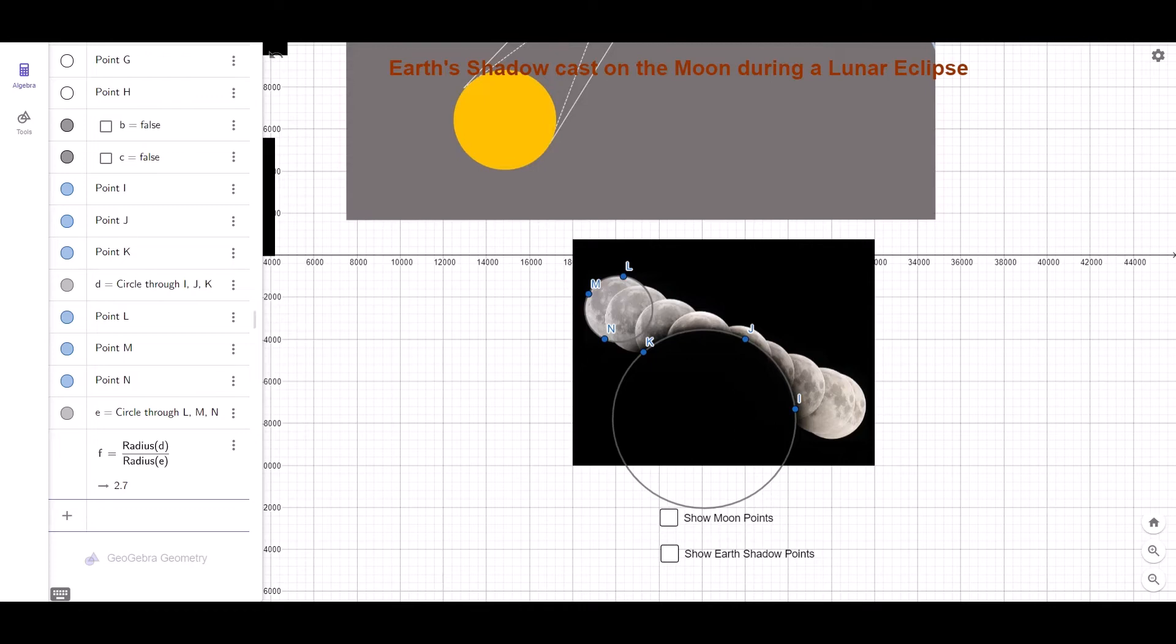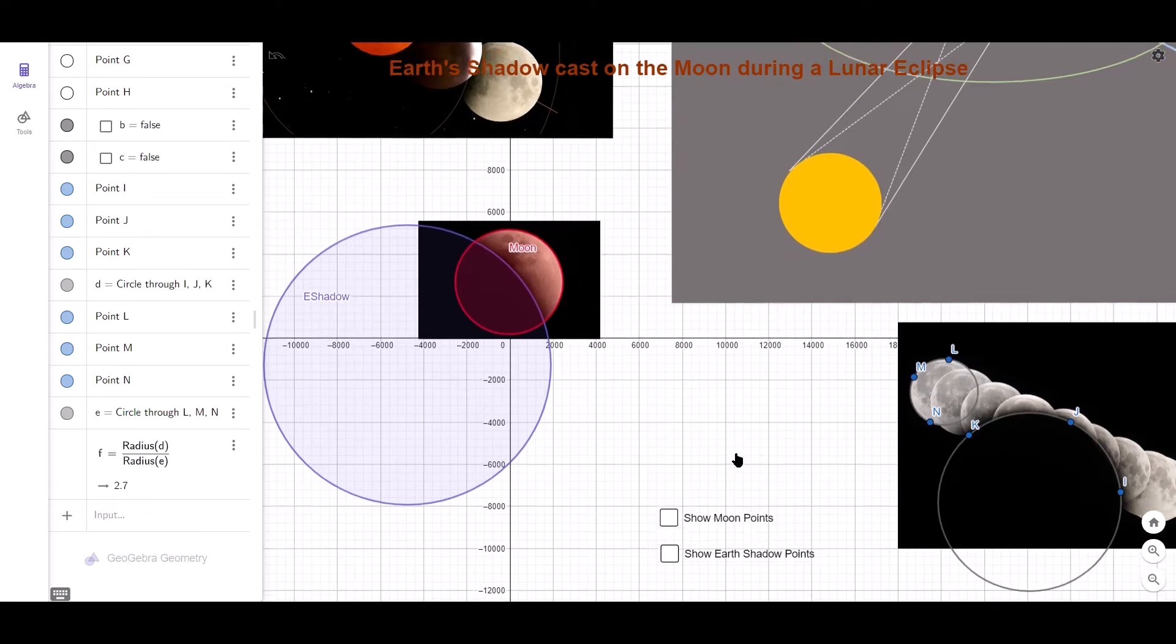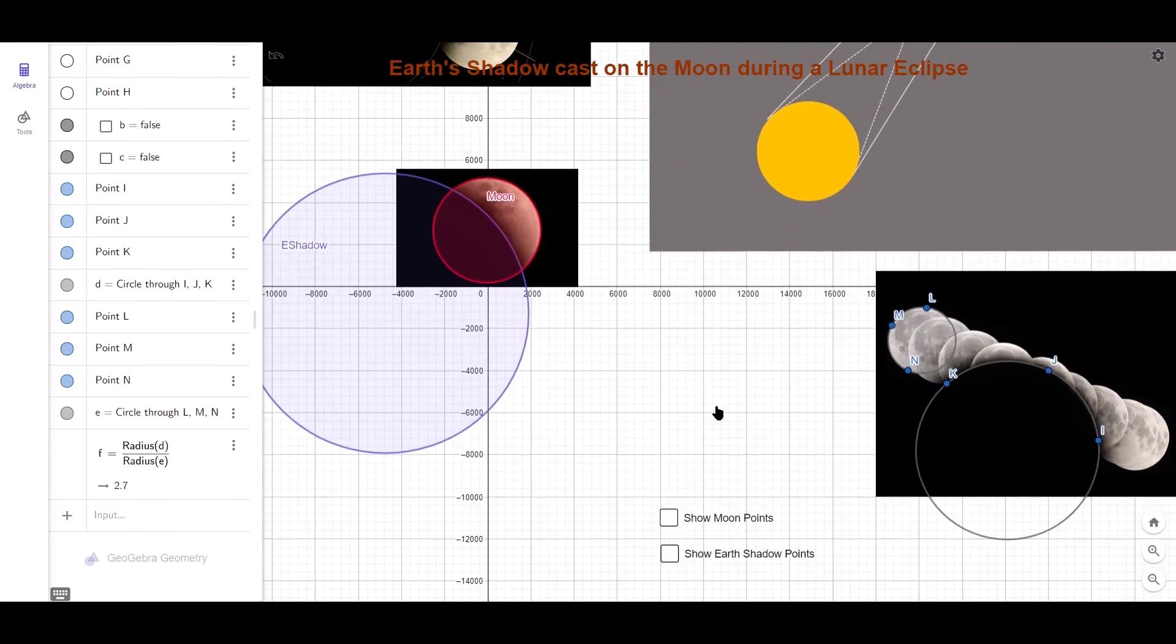So for this example, we got 2.7. The last example, we had 2.667. So they're roughly the same, about 2.7.